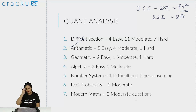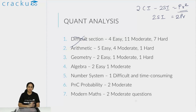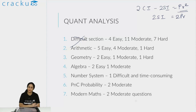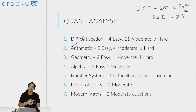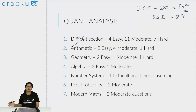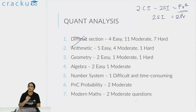In geometry I felt there were two easy questions - essentially two questions which were direct formula application. There was one question which was essentially a cosine rule question. It was not an easy question per se - that was a medium question - but if you know the cosine rule you can solve it. If not, it would be very difficult to solve; you can't solve that question without the cosine rule. If you are able to solve such questions you can solve them fairly quickly; if not they become very difficult.